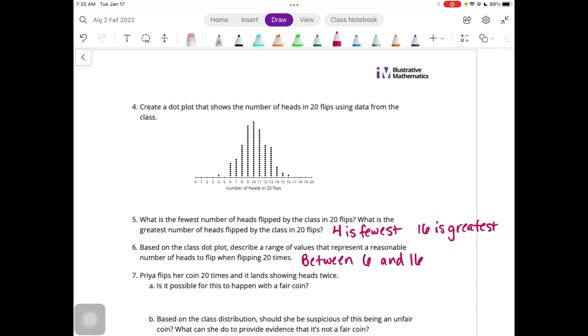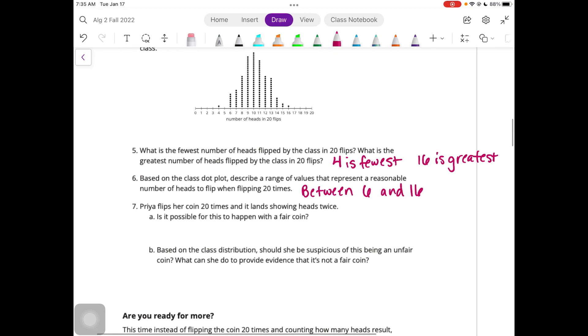So between six and 16 is pretty reasonable. Because you have lots of values. You do only have one at 16, but there aren't any values before 16 that don't have any dots. So Priya flips her coin 20 times, and it lands showing heads twice. Is it possible for this to happen with a fair coin? It's definitely possible. It's just not very likely.